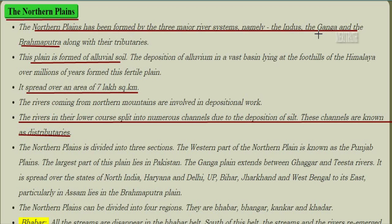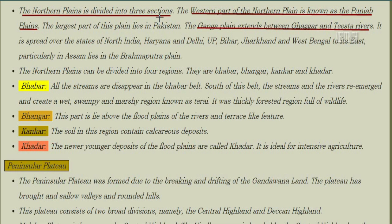The northern plains have been formed by three major river systems — the Indus, Ganga, and Brahmaputra — along with their tributaries. This plain is formed of alluvial soil. The deposition of alluvium in the vast basin at the foothills of the Himalayas over millions of years formed this fertile plain, which spreads over an area of seven lakh square kilometers. In their lower course, rivers split into numerous channels due to silt deposition; these channels are known as distributaries.